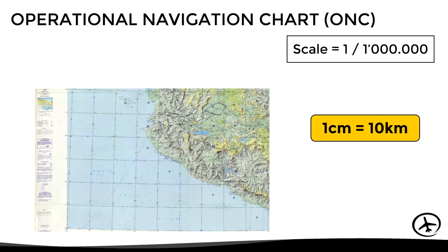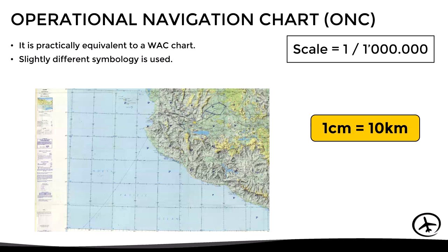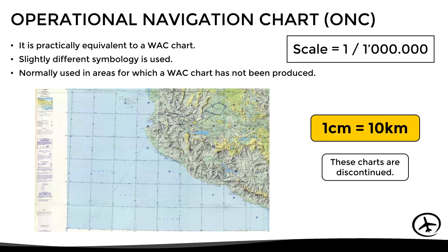Now, another chart very similar to this one is the operational navigation chart, which is abbreviated as ONC. This chart also has a scale of 1 in 1 million. However, it has a slightly different symbology and is normally used in areas for which a world chart has not been produced. This series of aeronautical charts were published by the United States Defense Mapping Agency, which means that these charts are discontinued and therefore much of the data they contain is outdated.